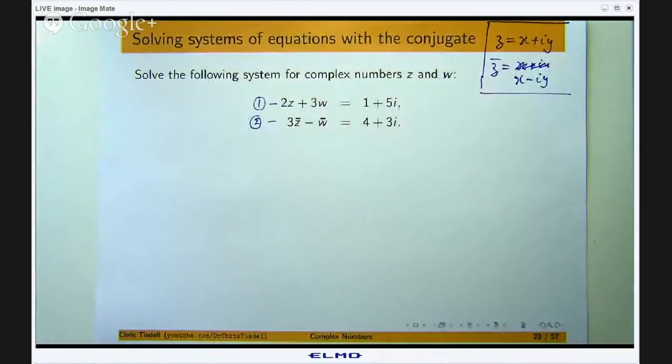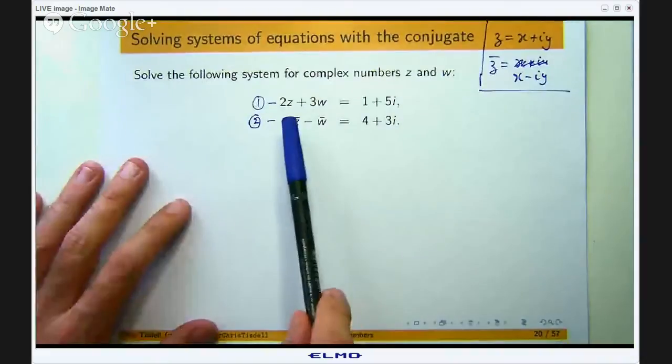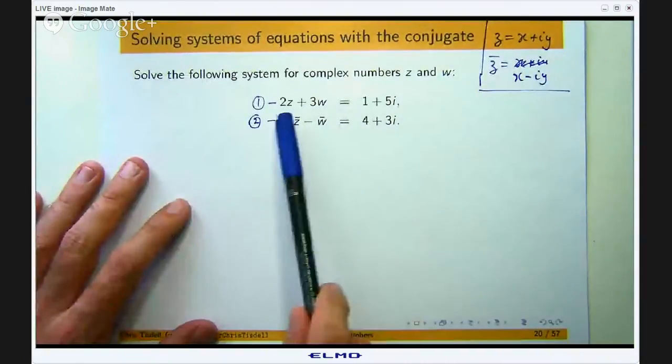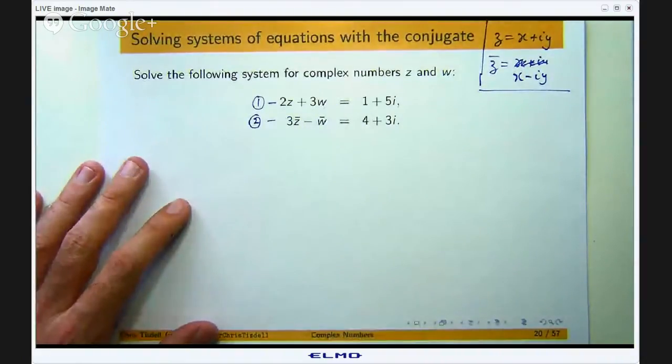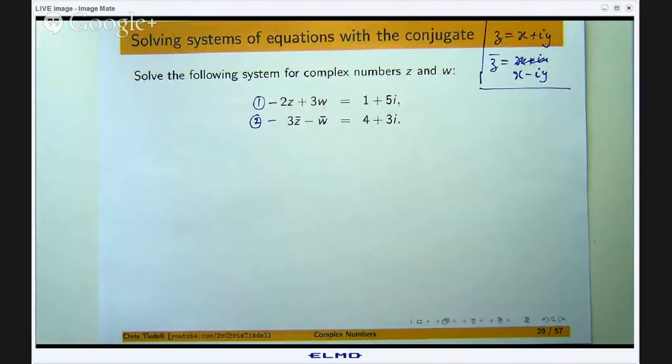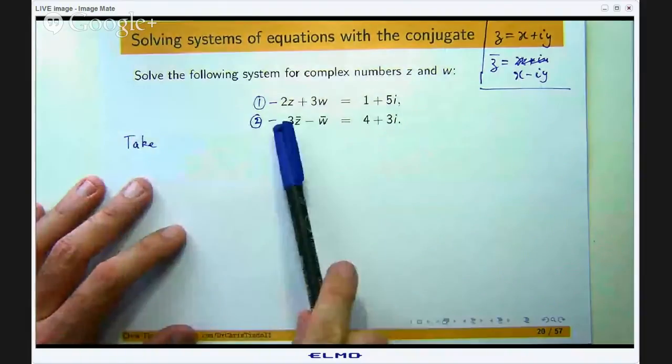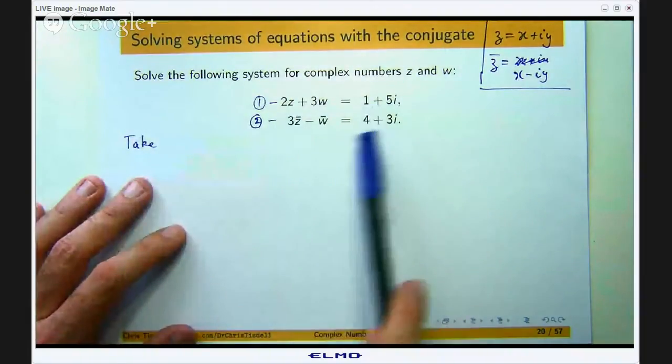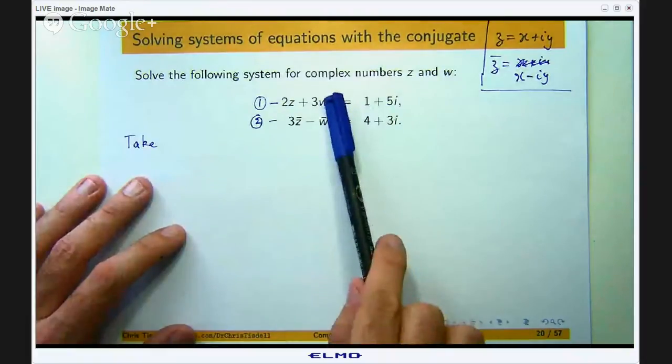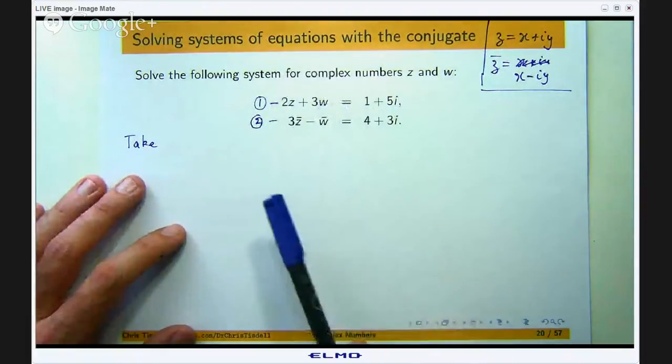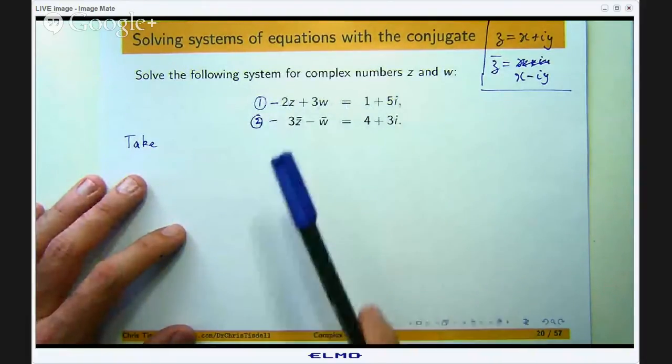Okay so what I am going to do is form a new equation out of equation two just by taking the conjugates of both sides and applying the properties of the conjugate. Okay so the idea is to basically look at equation two and recast it in a more compatible form that is more compatible with one.